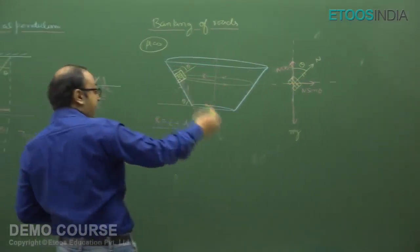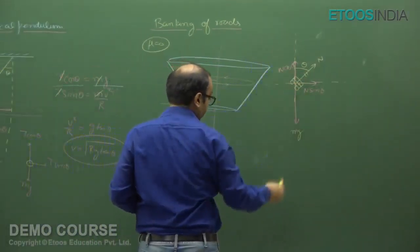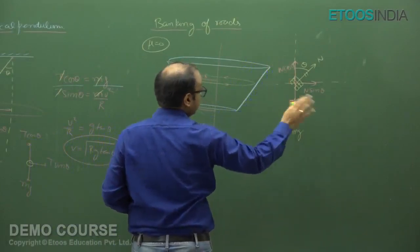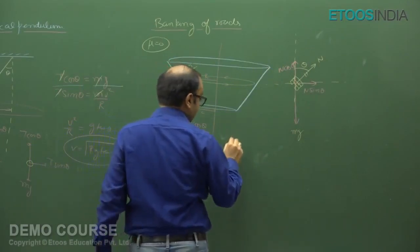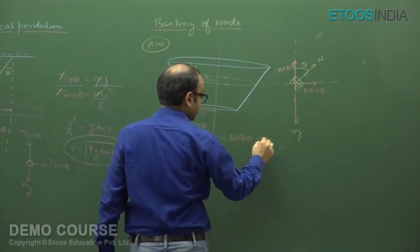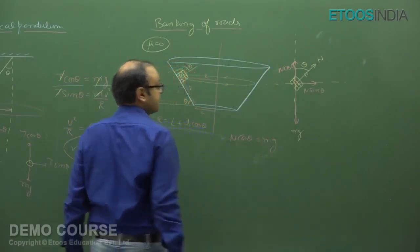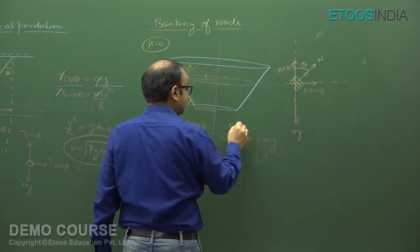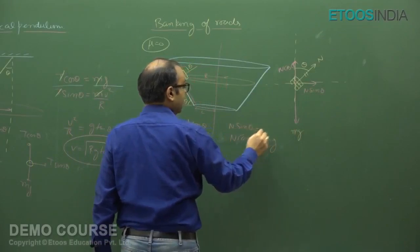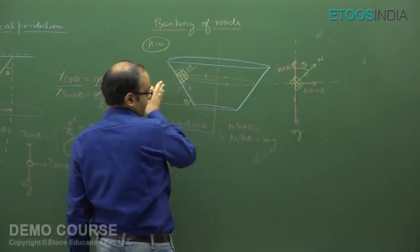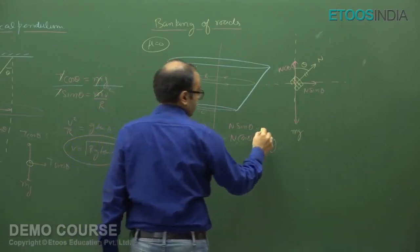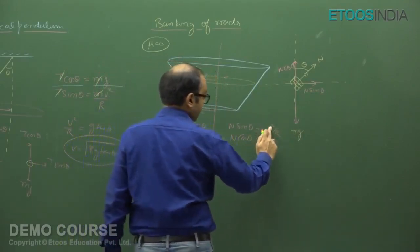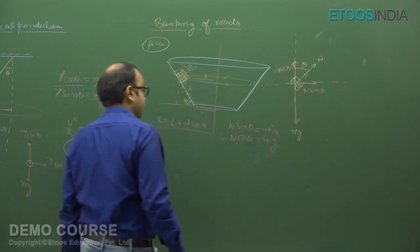Secondly, the net radial force — N sin theta — should equal Mv²/r. So N sin theta = Mv²/r. I don't need the normal; I just need the velocity. I have two equations, so I divide them: mass cancels with mass, normal cancels with normal, and velocity again comes out to be v = √(rg tan theta).